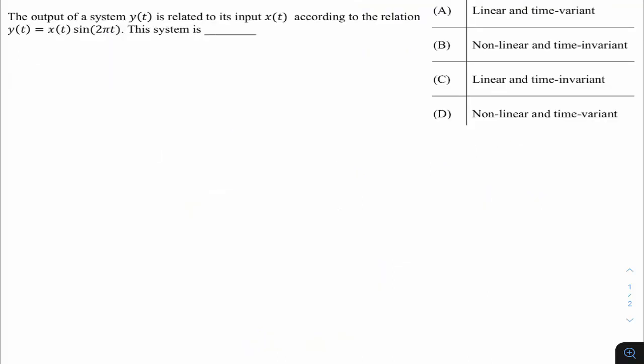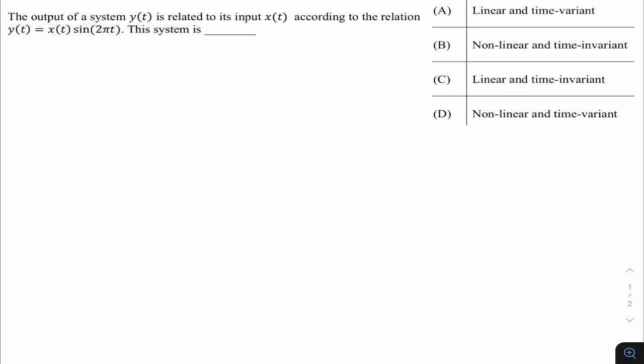This question is from GATE 22 Instrumentation, from Signal Systems, related to system properties. The output y(t) is related to input x(t) by y(t) = x(t)·sin(2πt). The options ask whether the system is linear and time-invariant, non-linear and time-invariant, or other combinations. We need to comment on linearity and time variance.